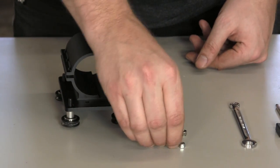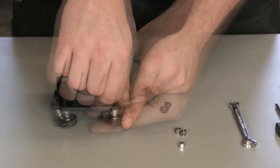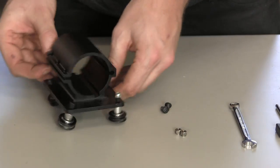Be sure that you put nylock hex nuts on the V-wheels in the smaller holes and eccentric nuts on the V-wheels with the larger holes.